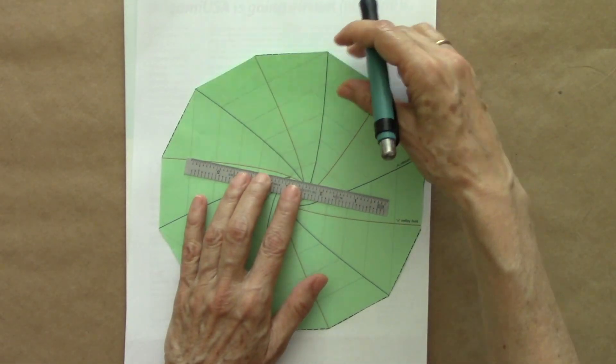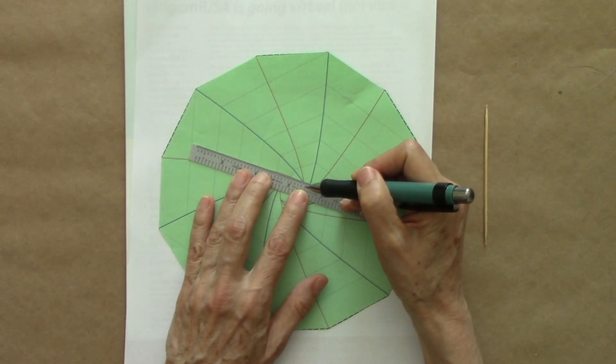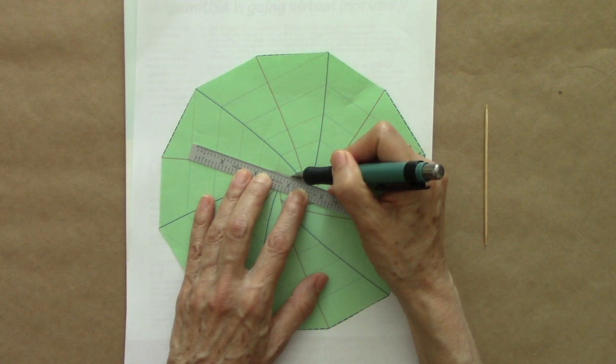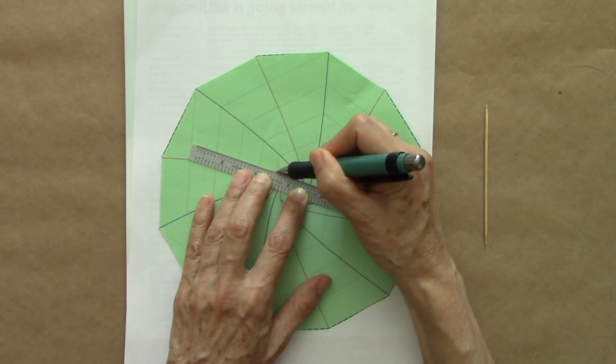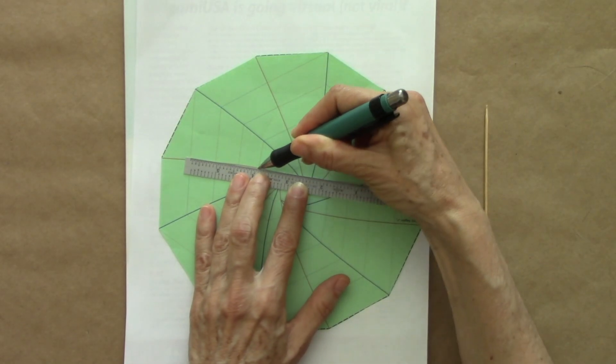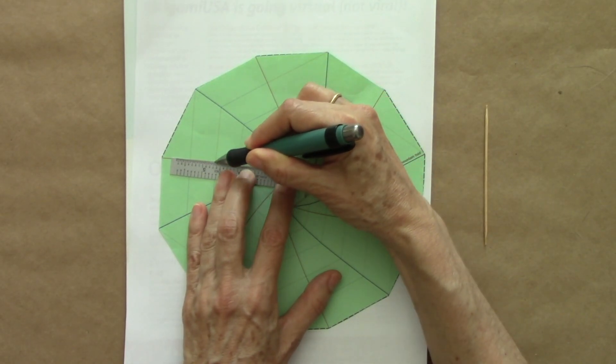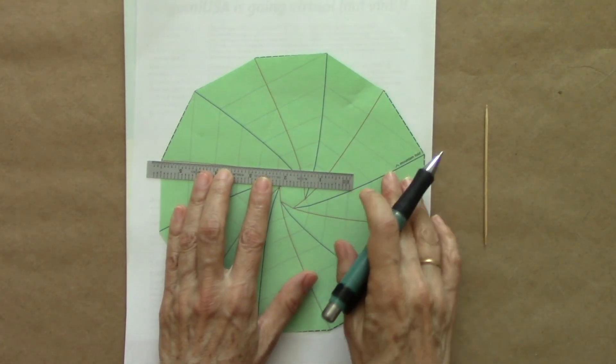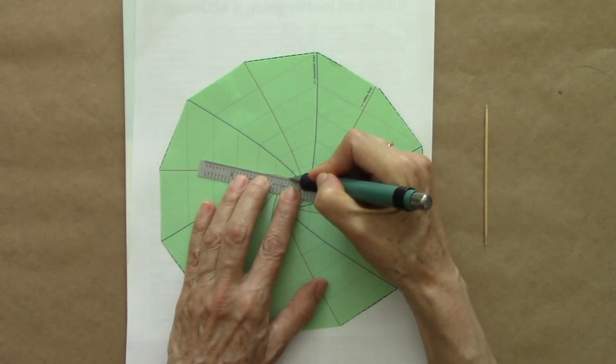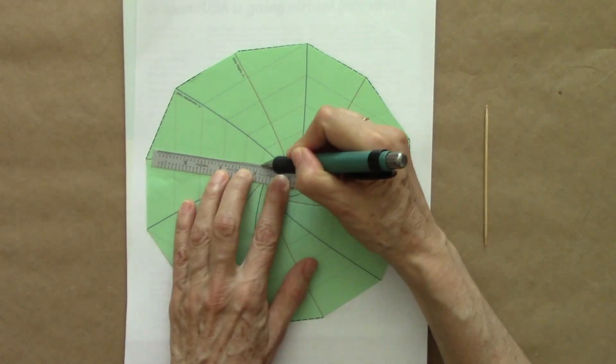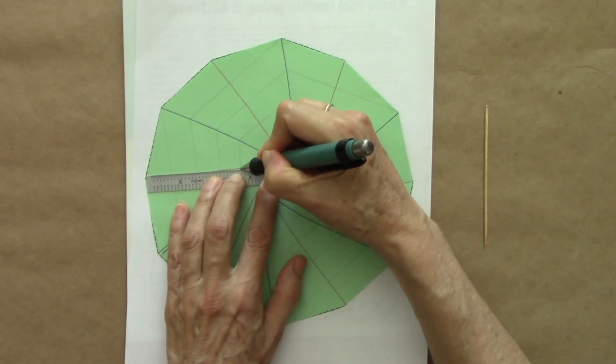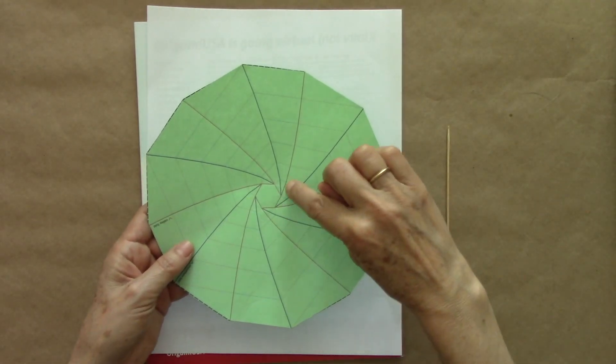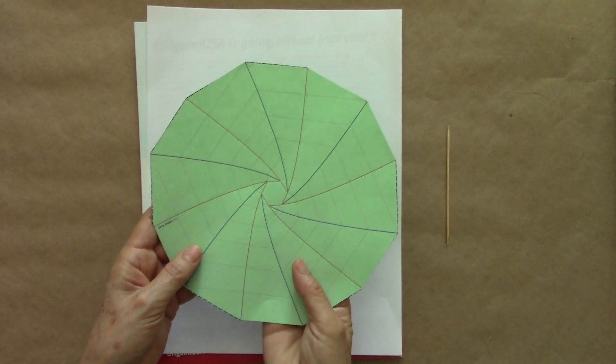Rotate. First section, section, and we go around. Rotate. So they are scored on this side as valley folds.